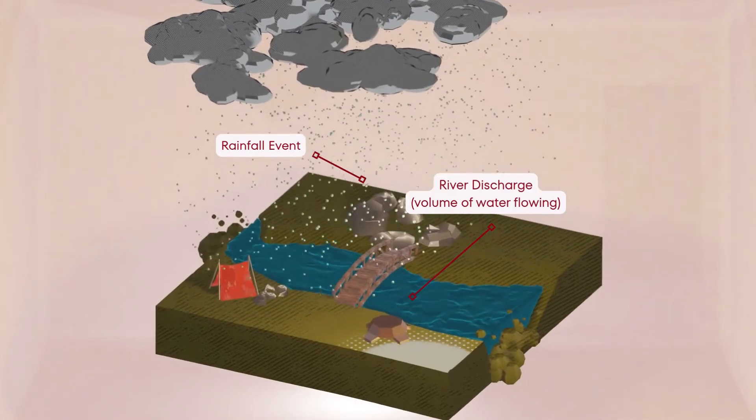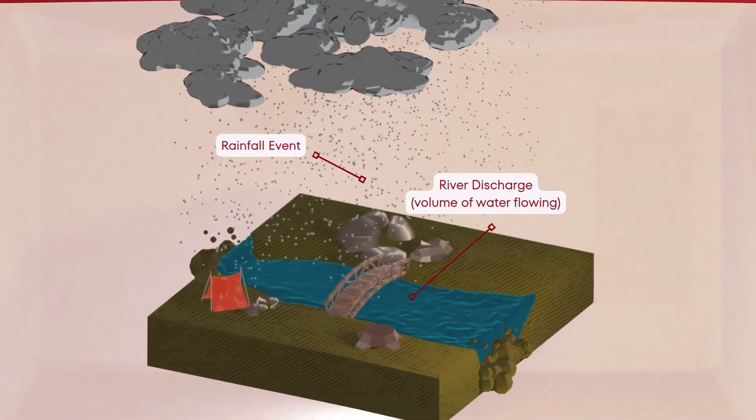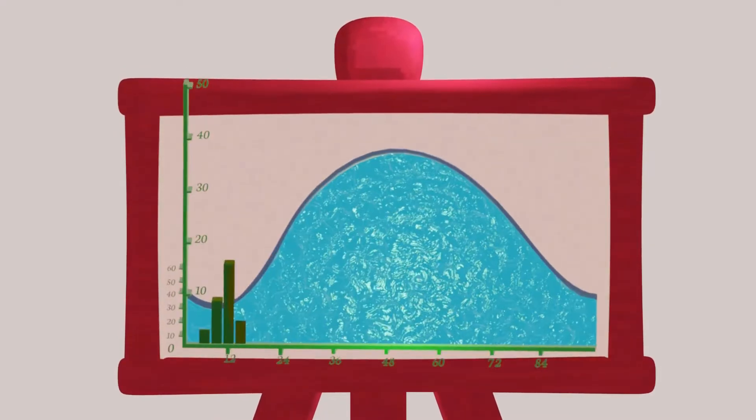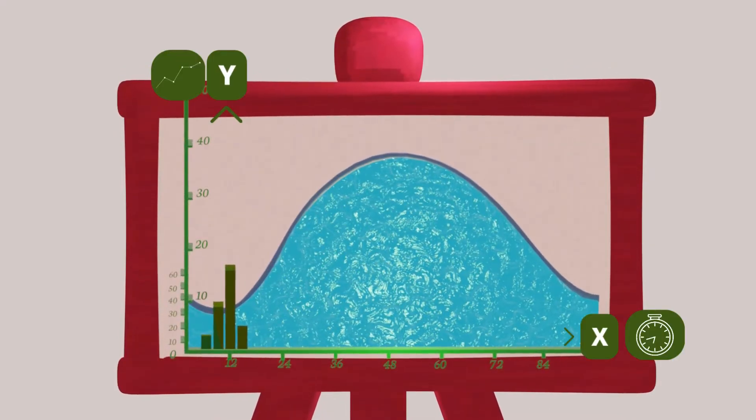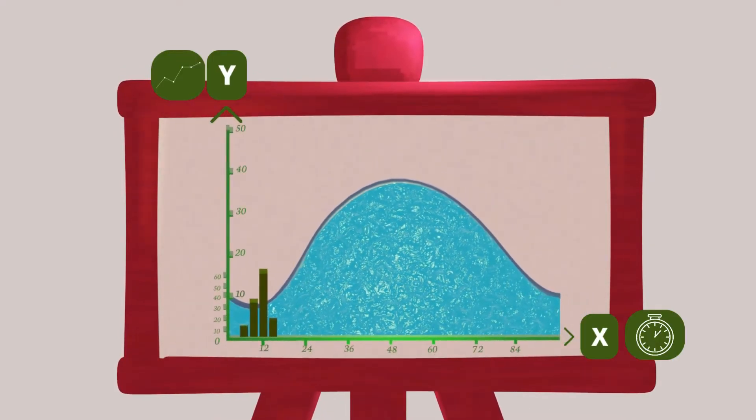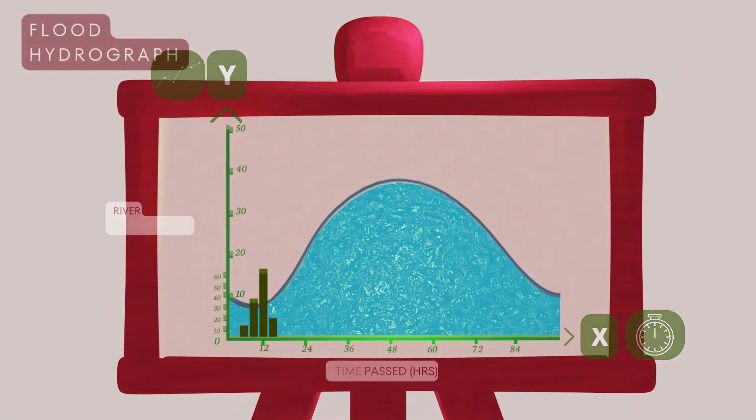There are two axes on the graph. The x-axis shows the time, while the y-axis shows discharge, usually measured in cumecs, cubic meters per second.